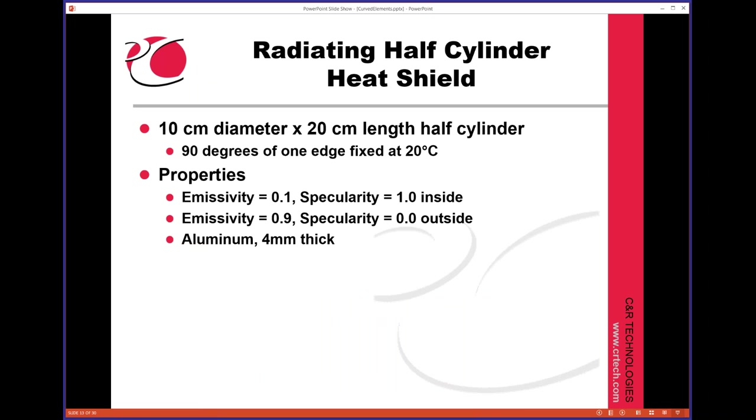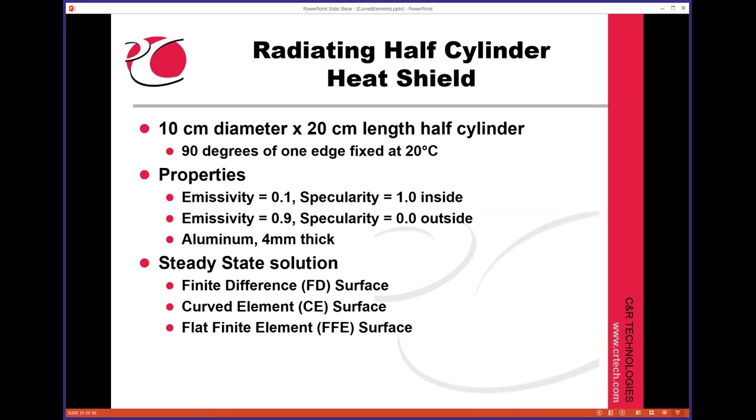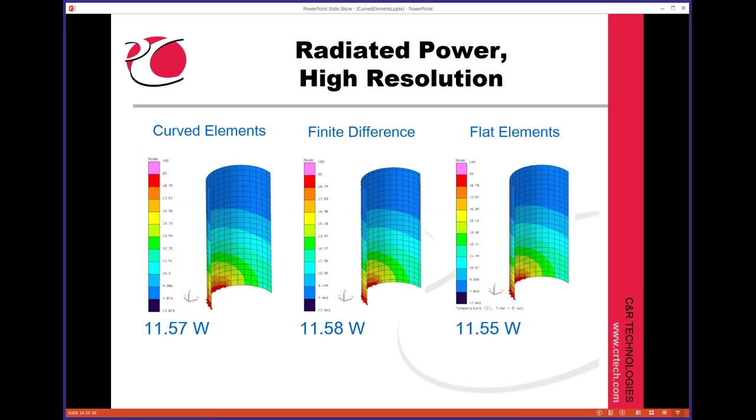Here's a little more interesting example. We've got a half a cylinder, and we're going to take half of one edge and fix it at a temperature. We're going to make it shiny and low-E on the inside and dark and diffuse on the outside. And we'll do a steady-state solution. We'll look at how much power this thing radiates, and we'll try it for three different methods and take a look at what happens as we change the resolution. So what's the advantage?